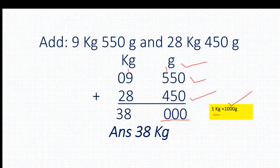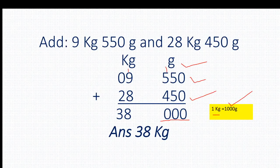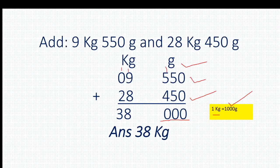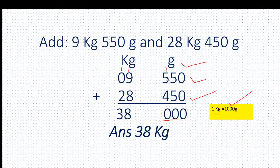So what we will do — we will write 1 kg here. Then 9 plus 1 equals 10, 10 plus 8 equals 18. So 8 will come here and 1 will be carried over to the next column. So 1 plus 2 equals 3. Here our answer is 38 kg.